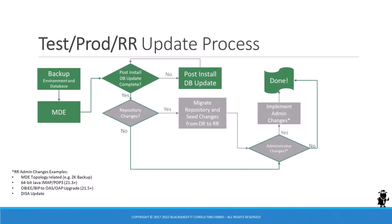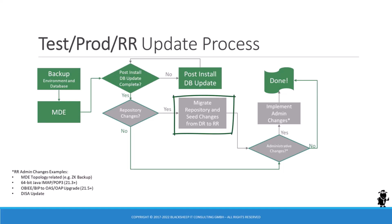The same is true for test or production — also known as RR environments — where the update process is a little shorter. The mandatory steps are the same: backup your environment, run MDE, run post-install database update. If there's nothing else to do, you're done. You have to repeat the update process for every Siebel instance. If the DR update included repository changes, you have to use the migration application to deploy new and updated artifacts from the development environment to the runtime environment. You might also have administrative changes on your checklist to execute before declaring the update complete.